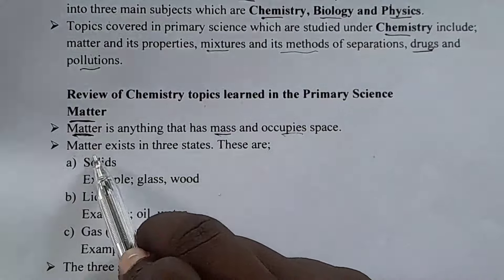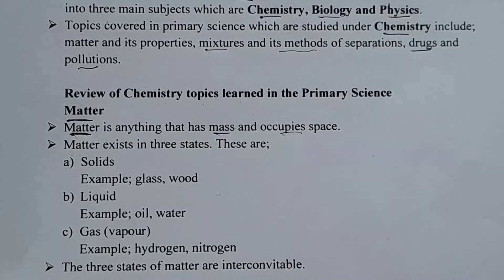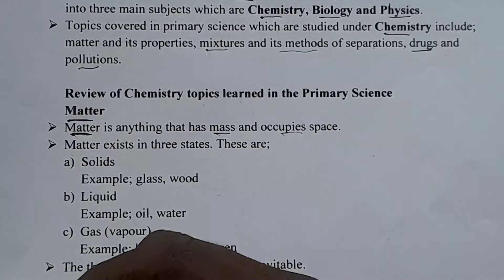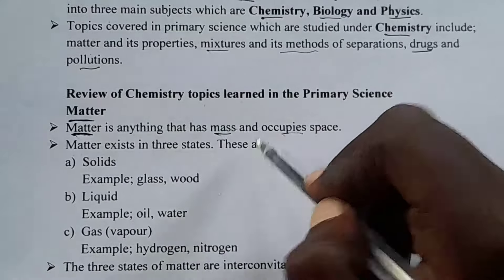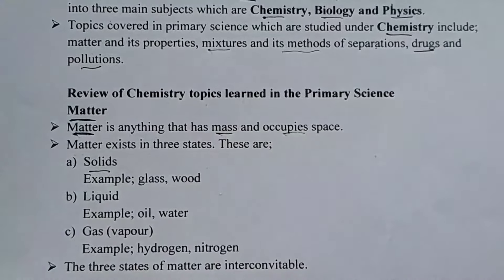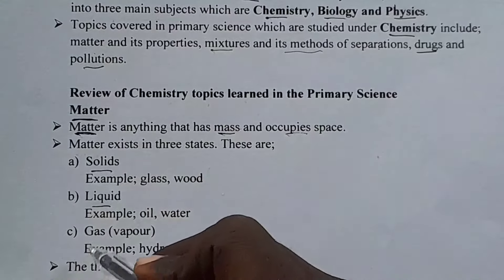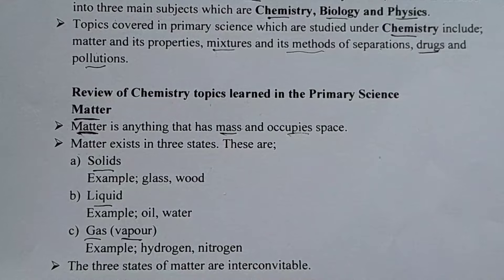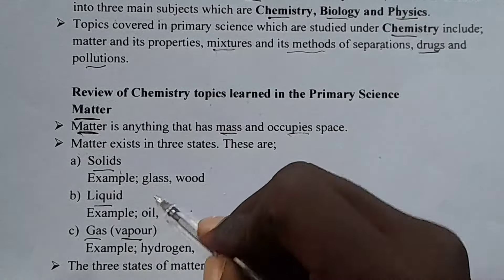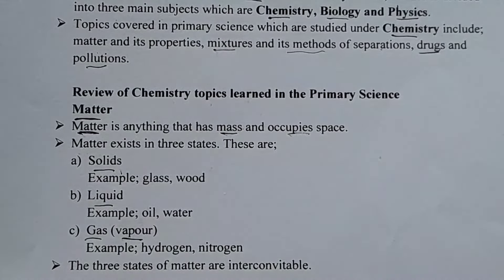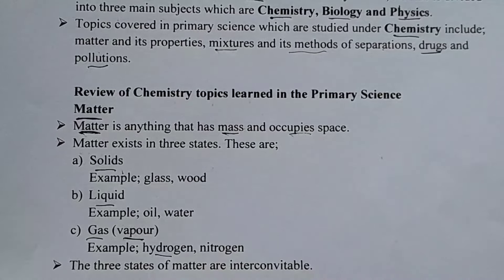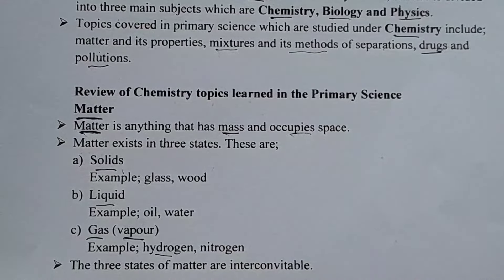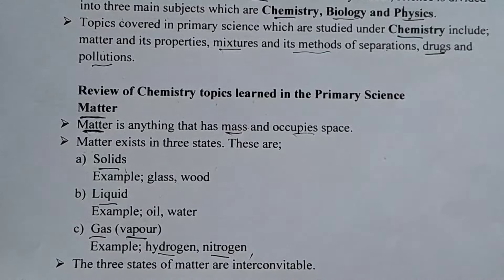Next, matter exists in three states. During the exam, you can be told to state the three states of matter. These are solids, liquids, and gases — we can also say vapor, they are just one and the same. Examples of solids include wood and glass. Liquids include oil and water. Gases include hydrogen, nitrogen, oxygen, and many others.